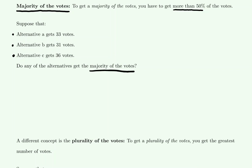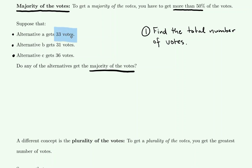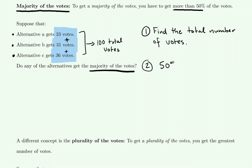Since we know majority has to be more than 50 percent of the votes, we're not just asking who got the most votes — we want to know if anyone got the majority. To calculate this, you first need to find the total number of votes by adding up all of the values for A, B, and C together. The total number of votes cast is 100, because 33 plus 31 plus 36 is 100. It's helpful to calculate what is exactly 50 percent of the total number of votes.